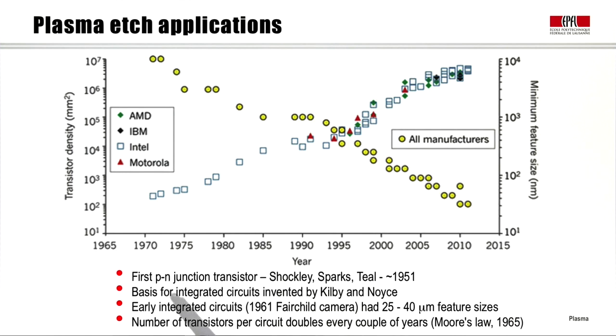Historically, the first PN junction transistor was made in the fifties. The basis for integrated circuits was invented by Kilby, Neuss and others. The very first integrated circuits, for example, in 1961 Fairchild camera, the feature sizes were of order of tens of microns. This graph shows how the number of transistors per circuit has almost doubled every few years. This is the famous Moore's law which he formulated back in 1965.